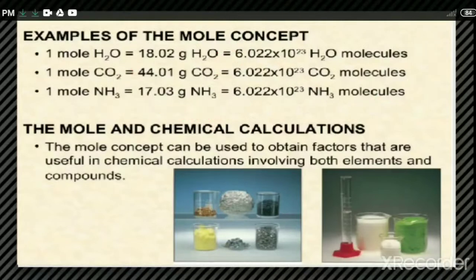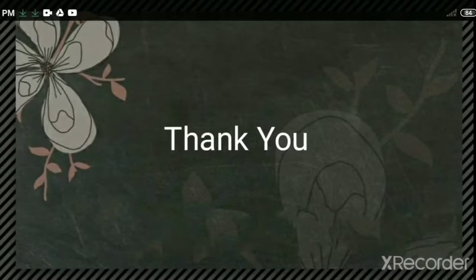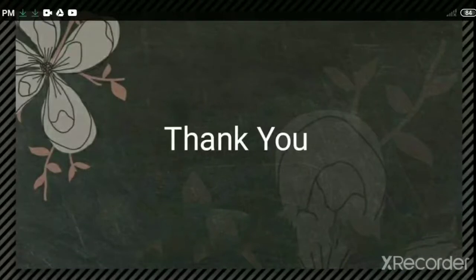Thus the mole concept can be used to obtain factors that are useful in chemical calculations involving both elements and compounds. It is quite an important concept. To summarize: one mole of any substance is the number of particles present in 12 grams of the C-12 isotope, equal to 6.022 × 10²³. In the next video, we will discuss its relation with mass — that is, we will discuss molar mass. Thank you everyone.